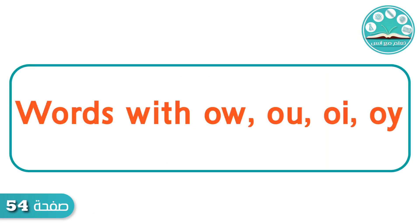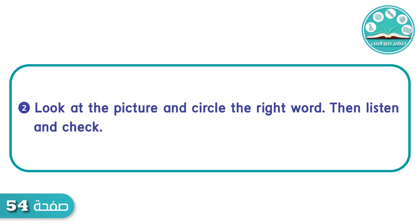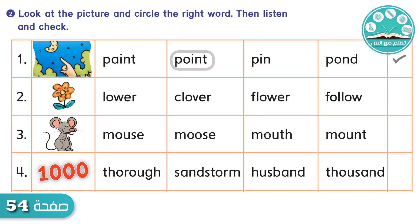Words with O-W, O-U, O-I, O-Y. Exercise 2: Look at the pictures and circle the right word. Then listen and check. Number 1: Point, point. Did you circle point? P-O-I-N-T.